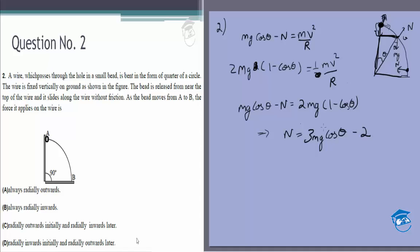Initially theta is 0, so it is mg, that means it is positive, so radially outwards. Finally theta is pi by 2. This is minus 2mg by the way. Finally theta is pi by 2, so this is 0, so this is minus 2mg.